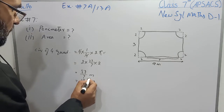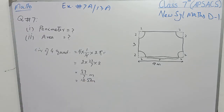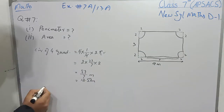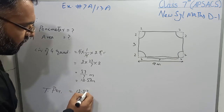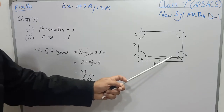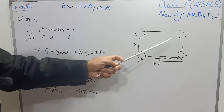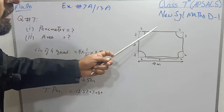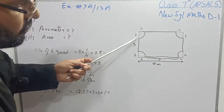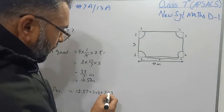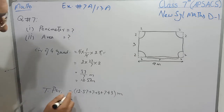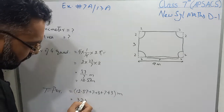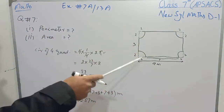Now we find the total perimeter. Total perimeter equals 12.57 plus 7 plus 3, and again 7 plus 3. Adding these up: 3 plus 7 is 10, 10 plus 10 is 20, and 20 plus 12.57 gives 32.57 meters as the perimeter of this figure.